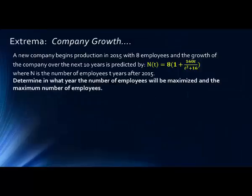Let's look at our first problem. Here we have a simple problem where the formula is given. A new company begins production in 2015 with 8 employees and the growth of the company over the next 10 years is predicted by N(t) = 8(1 + 160t)/(t² + 16), where N is the number of employees t years after 2015. Determine in what year the number of employees will be maximized and the maximum number of employees.